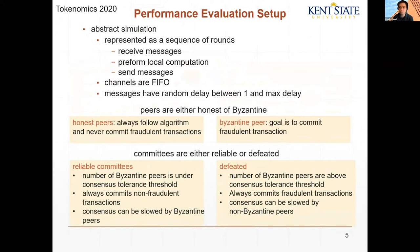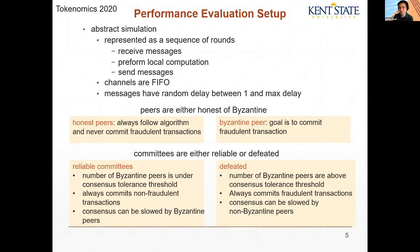We evaluate BlockGuard — both composite and dynamic — in an abstract simulation where computation is simulated as a sequence of rounds. Each round has three phases. In the first phase, a peer receives messages. In the second phase, they perform local computation — for Proof-of-Work, this may be attempting to mine; for PBFT, this may be inspecting received messages to decide whether to move to the next phase. The last phase of a round is to send messages, where peers send out messages to other peers. Channels are FIFO, and messages have a random delay between one and some specified maximum delay.